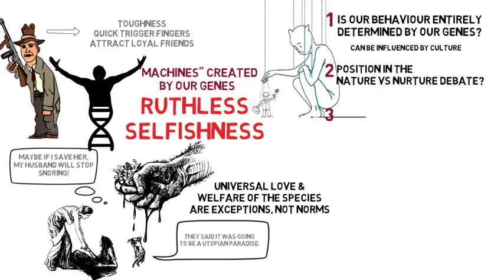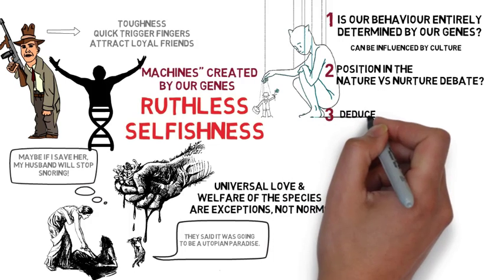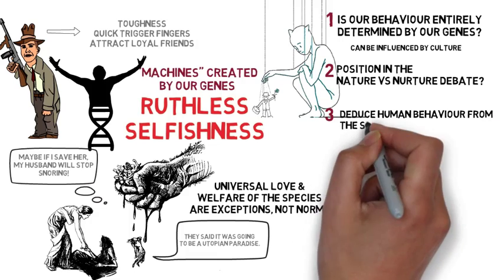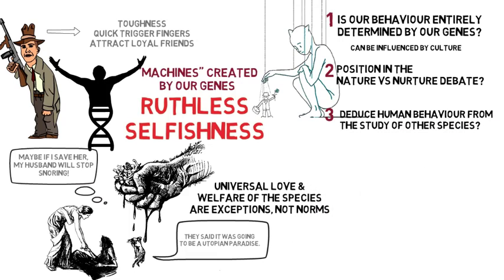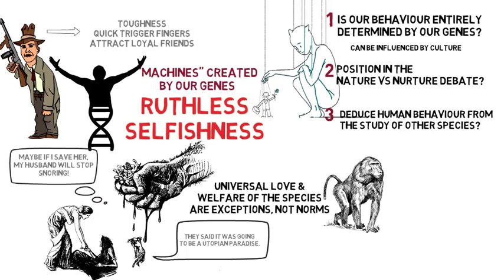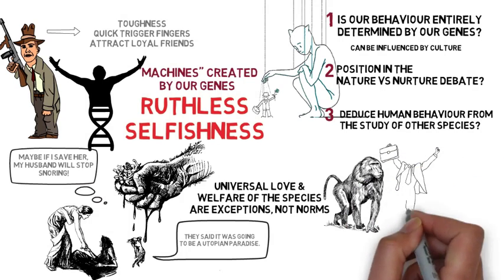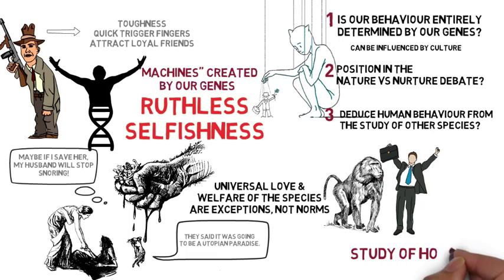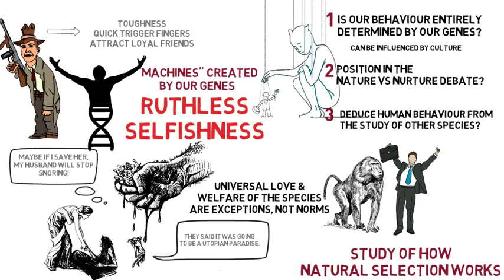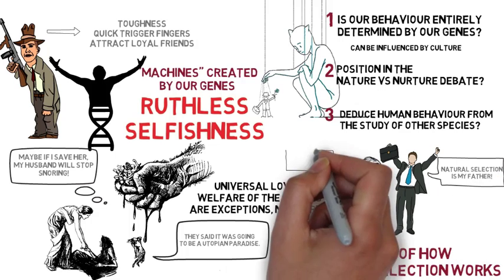Thirdly, Dawkins reminds us he is not drawing conclusions about the behavior of human beings through the study of other species. For example, the observation that baboons act selfishly must not be taken to mean that humans act selfishly too. Instead, his starting point is studying the way natural selection works to argue that anything that evolved by natural selection — baboons, humans, and all other living creatures — should be selfish.